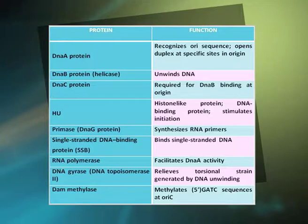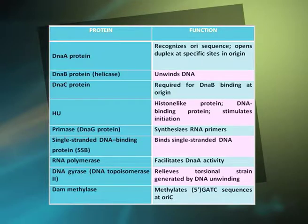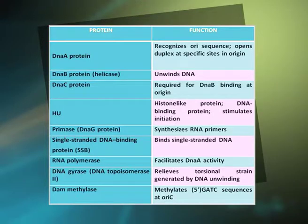Key initiation proteins include: DnaA protein, which recognizes the oriC sequence and opens the duplex at specific sites; DnaB protein, which unwinds DNA; DnaC protein, required for DnaB binding at the origin; HU, a histone-like DNA binding protein that stimulates initiation; primase (DnaG), which synthesizes RNA primers; SSB, which binds single-stranded DNA; RNA polymerase, which facilitates DnaA activity; DNA gyrase (topoisomerase II), which relieves torsional strain; and Dam methylase, which methylates 5' GATC sequences at oriC.